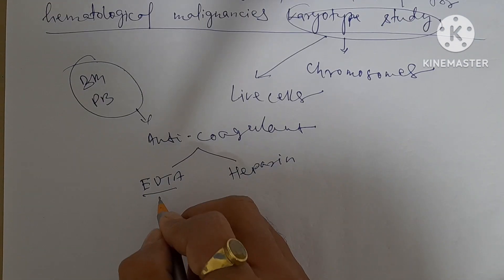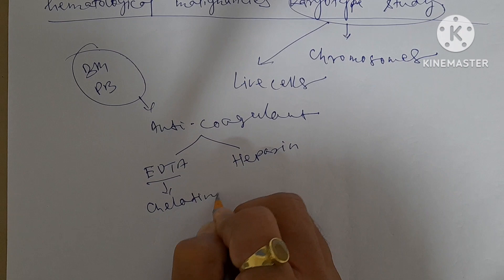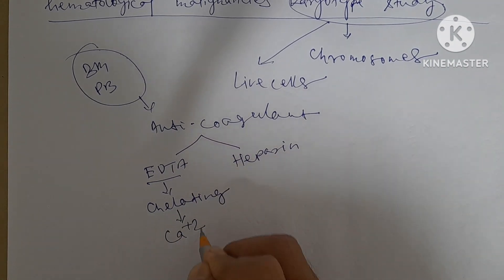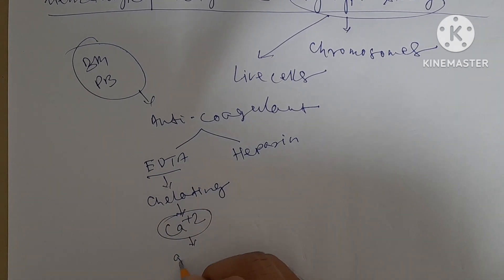Now coming to EDTA, this EDTA is a chelating agent. This chelating agent has a property to bind calcium ions. These calcium ions are required for the growth of the cells.